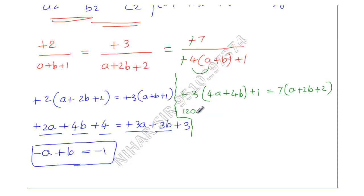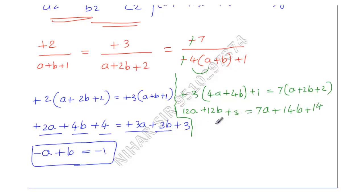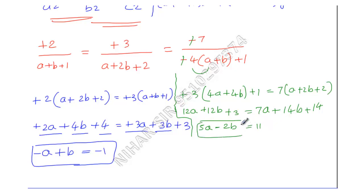Expanding: 12A + 12B + 3 = 7A + 14B + 14. Collecting like terms: 12A - 7A = 5A, 12B - 14B = -2B, and 3 moves to the right giving 14 - 3 = 11. So Equation 2 is: 5A - 2B = 11.